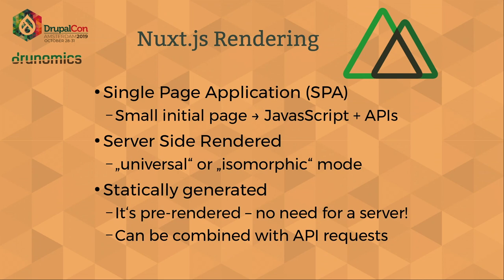NuxtJS has a nice feature of different rendering modes. By default you can have a single page application — a small initial HTML page that delivers the JavaScript application and from there everything is JavaScript using APIs. It also has a server-side rendering mode where the same code runs on the server and client, which is good for SEO. And of course there's static generation mode, where you pre-render into static files so you don't need a server, and you can combine it with the single page application approach to use APIs.